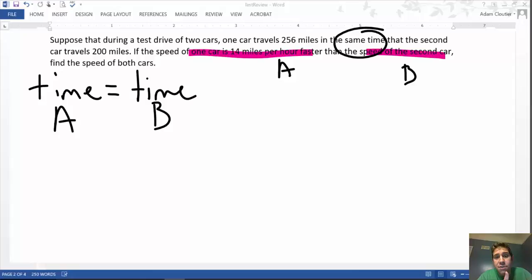So which car is faster? Definitely, the one that travels 256 miles. So which one corresponds to A and which one corresponds to B?